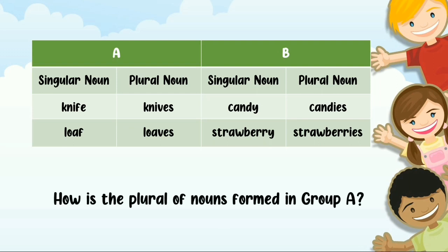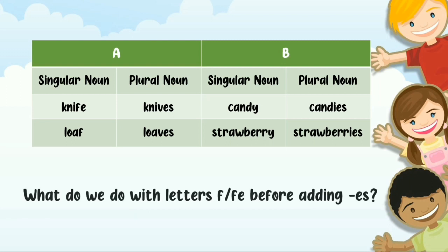How is the plural of nouns formed in Group A? What do we do with the letters F or FE if we use the plural form?